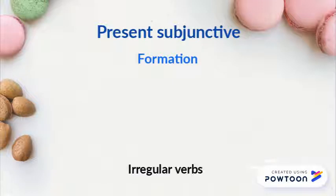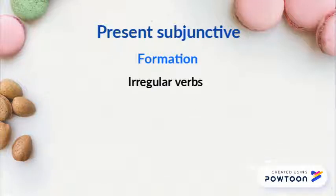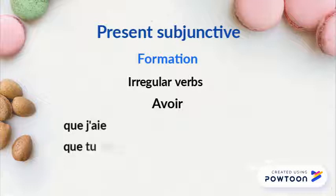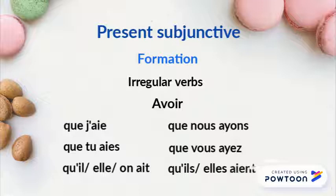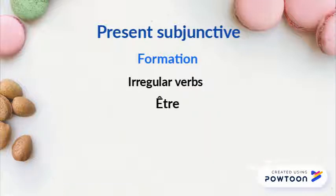There are many irregular verbs. For instance, AVOIR: que j'aie, que tu aies, qu'il/elle/on ait, que nous ayons, que vous ayez, qu'ils/elles aient. And ÊTRE: que je sois...